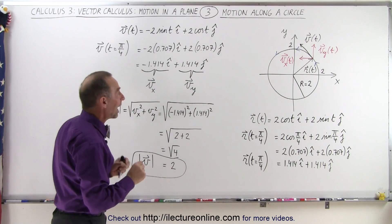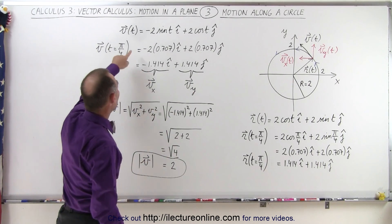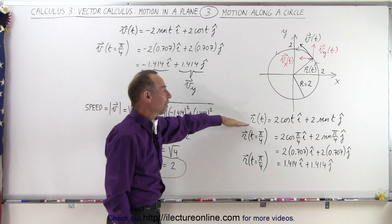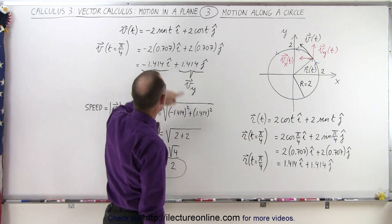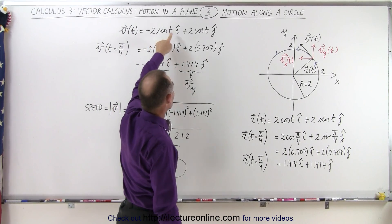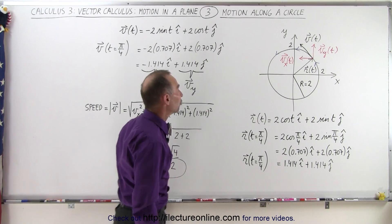What is the velocity at that time? So now we want to find the velocity which is going to be equal to the derivative of the position vector. So when we take the derivative, we get minus 2 times the sine of t in the i direction plus 2 times the cosine of t in the j direction.